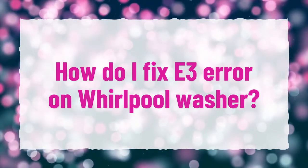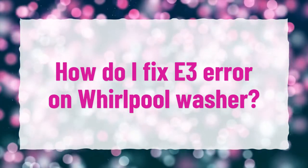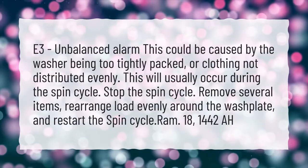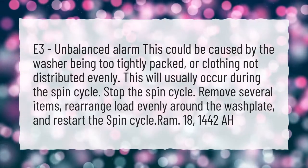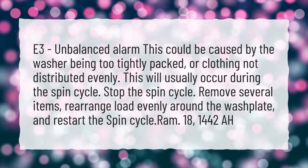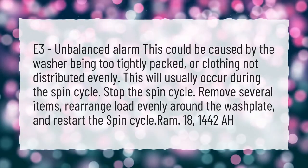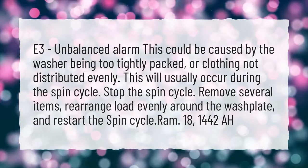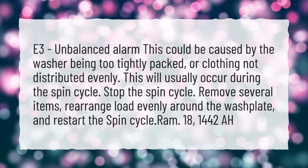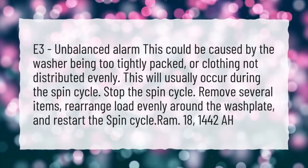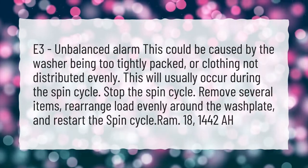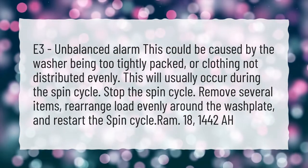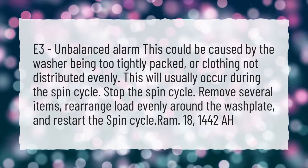How do I fix E3 error on Whirlpool washer? E3 unbalanced alarm — this could be caused by the washer being too tightly packed, or clothing not distributed evenly. This will usually occur during the spin cycle. Stop the spin cycle, remove several items, rearrange the load evenly around the wash plate, and restart the spin cycle.